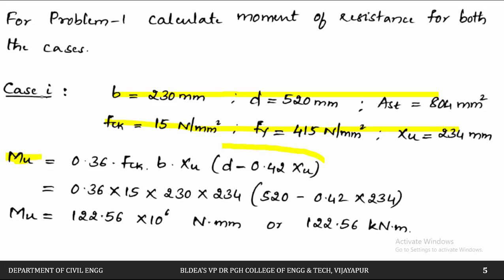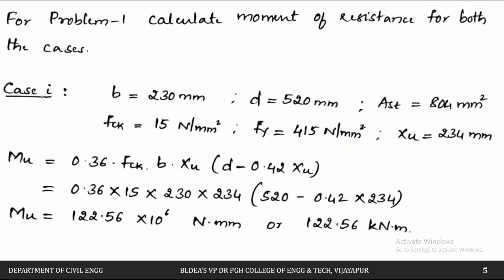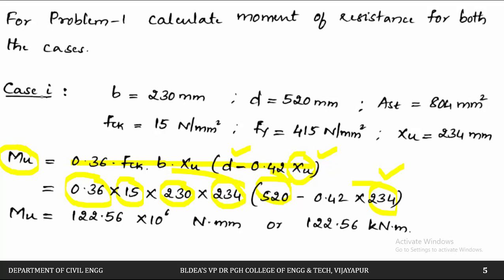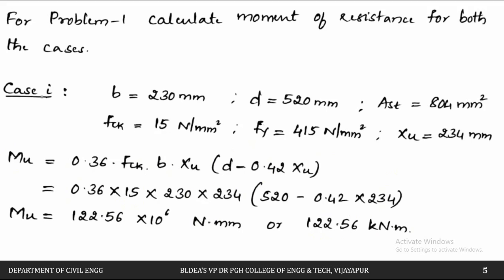The moment of resistance can be calculated based on compressive or tensile forces. Using the compressive force formula: MR = 0.36 × FCK × B × XU × (D − 0.42 × XU). Substituting FCK = 15, B = 230, XU = 234, D = 520, we get MR = 122.56 × 10⁶ N·mm = 122.56 kN·m.